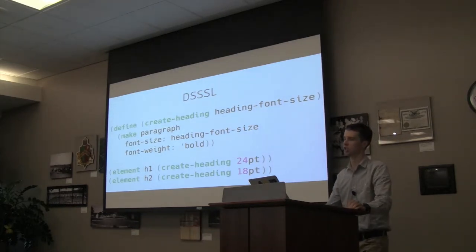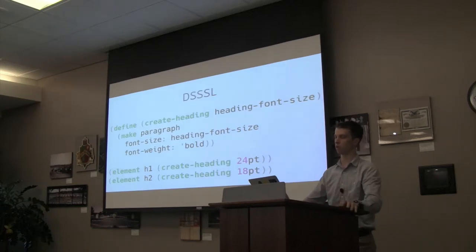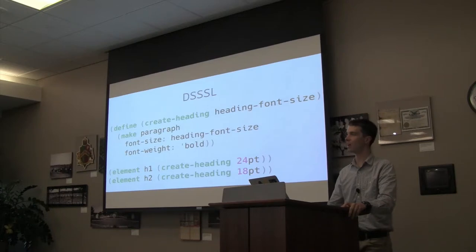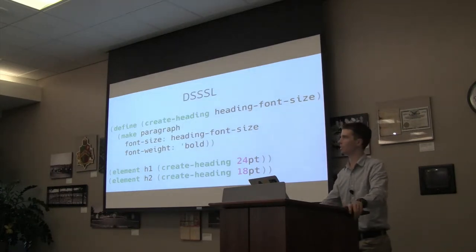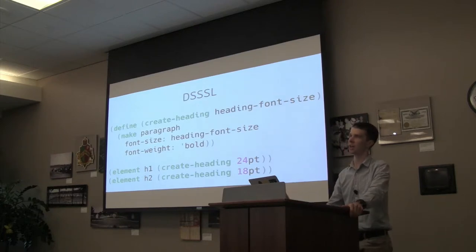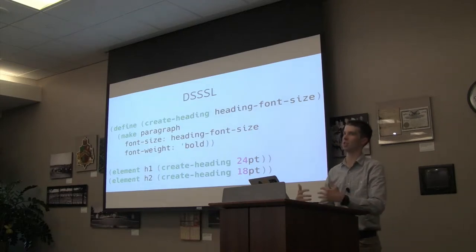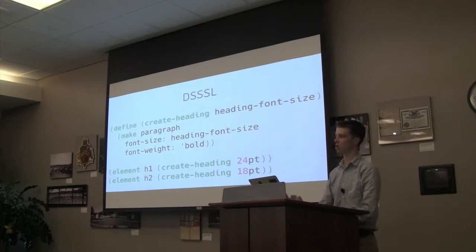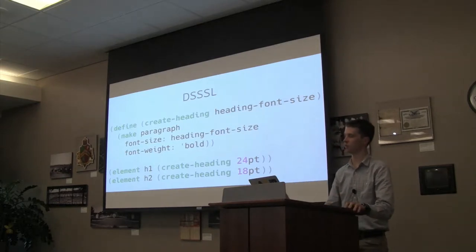You could pass in parameters for how big you want the font size, how large you want the font weight to be, and then take those functions and pass them into any element you select. This is still something you can't do in standard CSS — you can't even transpile it. The best you have are mixins in Sass, and those aren't at runtime. There are still significant limitations compared to what DSSSL would allow.